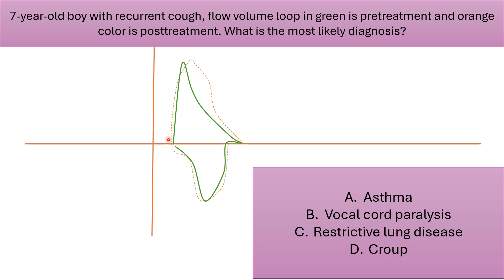The expiratory curve in green is concave before treatment, and after treatment it looks normal. The inspiratory looks normal before and after treatment. What is the most likely diagnosis? Asthma, vocal cord paralysis, restrictive lung disease, or croup? The correct answer is asthma.